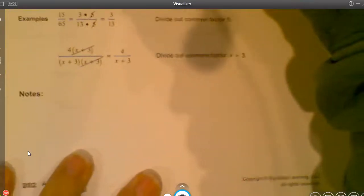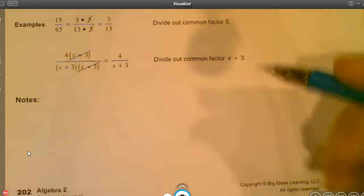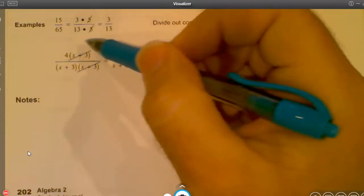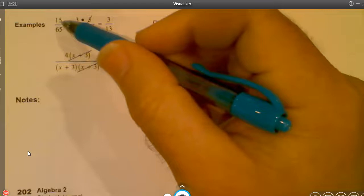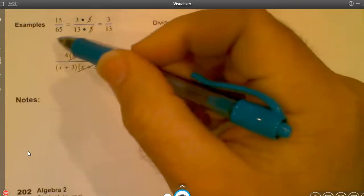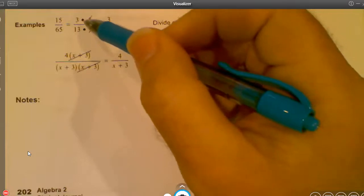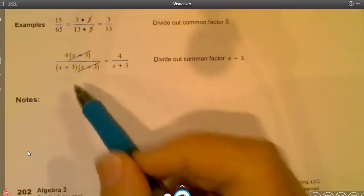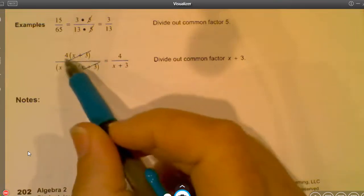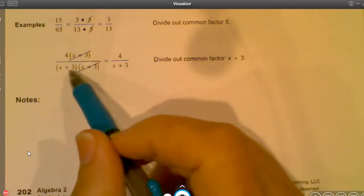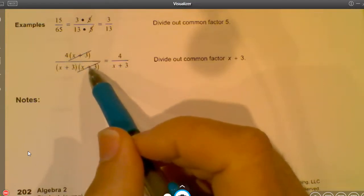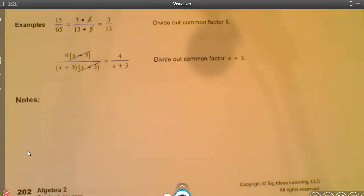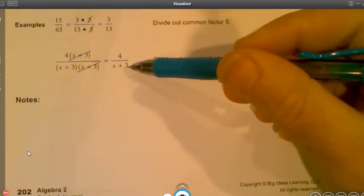Just a couple of quick reminders. You can only cross out things that are being multiplied together. Going very back to basics, if you're looking at this, if I break apart the 15 into three times five and I break apart this guy into 13 times five, because this is multiplication, that's why I'm allowed to cancel these out. The same is going to be true with factors, right? This is four times X plus three, and this is X plus three times X plus three. So these two common factors can all be eliminated right there. And then you simply write down what we are left with.